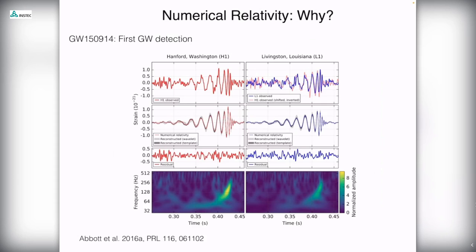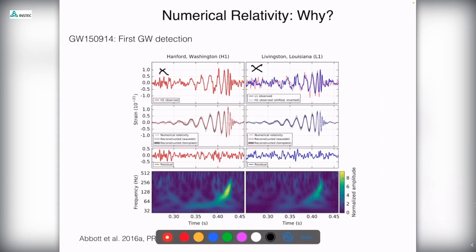Recently, numerical relativity has been focused on gravitational wave detection. What you have here is figure one from the PRL paper that announced the first detection, which was on September 14, 2015. In the top panel is the signal detected in Hanford, Washington, near Seattle, and in Livingston, Louisiana, near New Orleans. Amazingly, that is what LIGO saw. When I started studying this, we never imagined that the first detection was going to be that strong — we were very lucky.